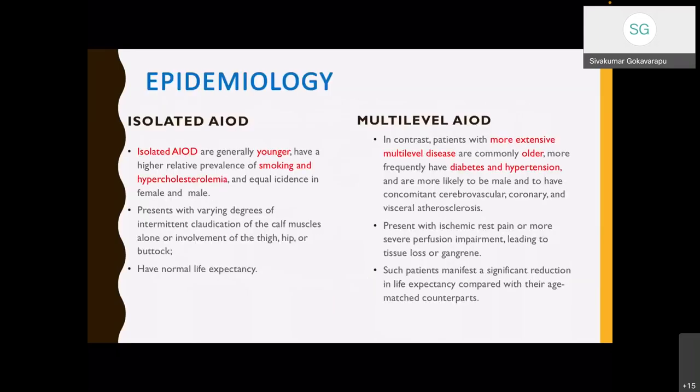Regarding disease epidemiology, it is divided into isolated and multilevel occlusive disease depending upon the age pattern. Isolated disease presents in younger patients and multilevel occlusive disease in older groups. Younger patients present with smoking and hypercholesterolemia as risk factors, while others present with diabetes and hypertension. There is equal incidence in male and female in isolated disease, whereas males are more commonly affected in multilevel disease. In isolated aortoiliac occlusive disease, patients present with intermittent claudication involving the thighs, hip, or buttocks.